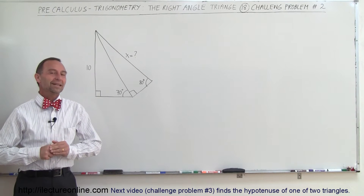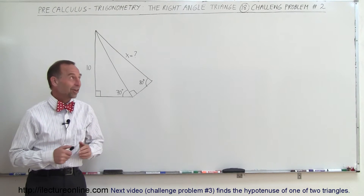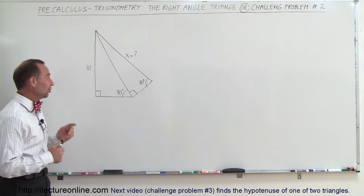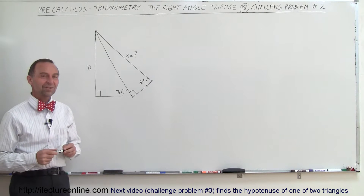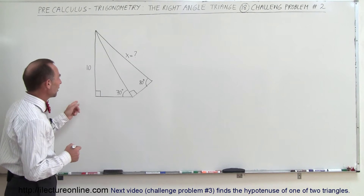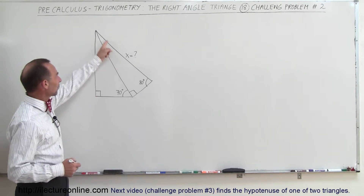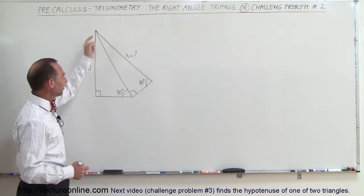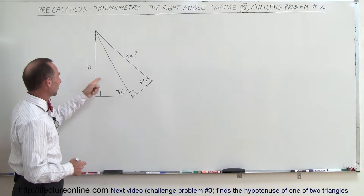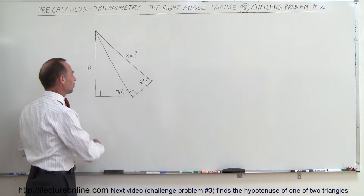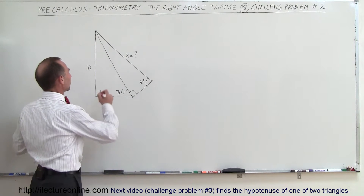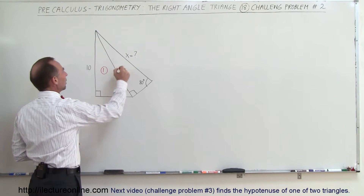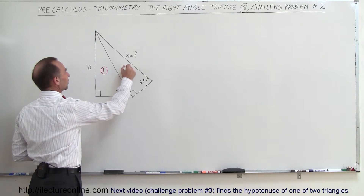Welcome to Electronal Line. Our next challenging problem is two triangles side by side. What we're trying to do is figure out what this side is equal to in length. It helps to number the triangles, so let's call this triangle number one and this triangle number two.